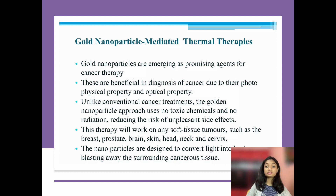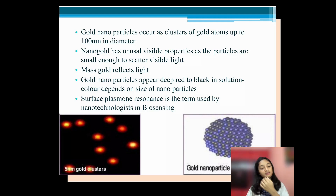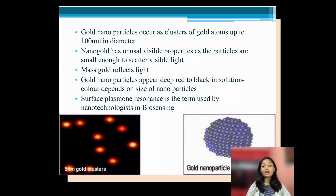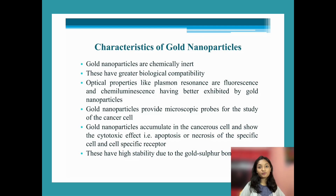One more advantage of gold nanoparticles is that they can work on any soft tissue tumors such as brain, skin, breast, prostate, head, neck, and cervix. These gold nanoparticles are designed to convert light into heat, blasting away surrounding cancerous tissue. Gold nanoparticles are clusters of gold atoms up to 100 nanometers in diameter — ultrafine particles small enough to scatter visible light. Mass gold reflects light and they are deep red to black in solution; color depends on the size of the nanoparticles and the surface plasmon resonance, used by nanotechnologists in biosensing.